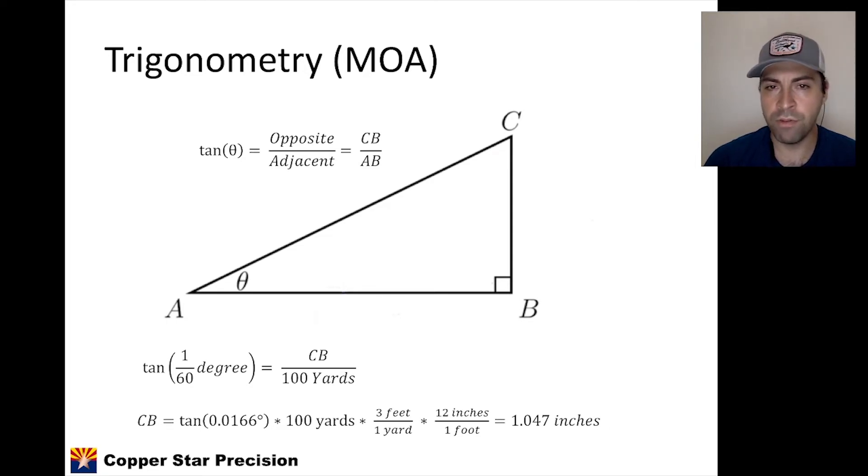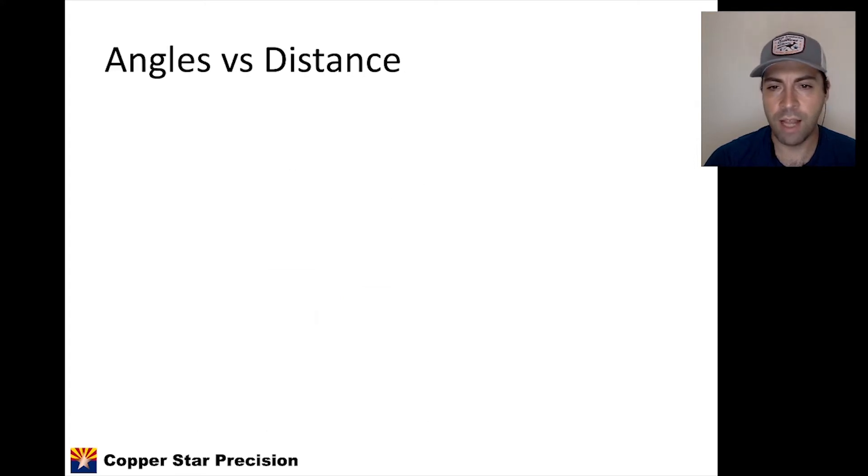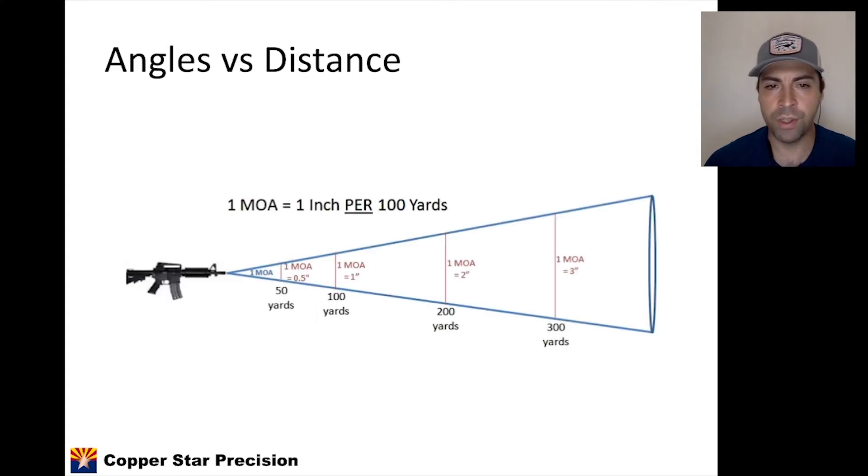And I think what people are most familiar with is the angle versus distance. And that's where we get images like this in shorthand, where we say 1 MOA is about 1 inch per 100 yards. Remember, it's an angular measurement, so it varies on the distance. So right in the middle there, we have 100 yards. So 1 MOA is 1 inch at that distance. At 200 yards, it's about 2 inches. Remember, it's 1 and a little bit, so it's not exactly 2. At 300 yards, it's 3 inches and so on. At 1,000 yards, it'd actually be 10.5 inches, not 10 inches, because that rounding starts to catch up with us.